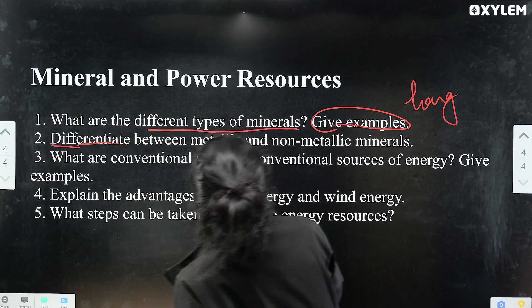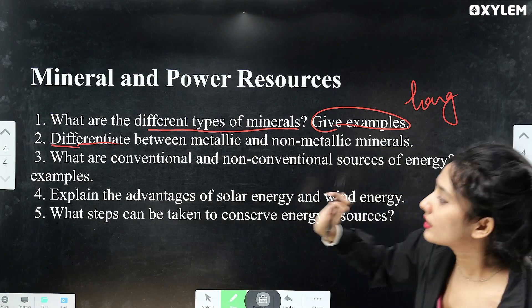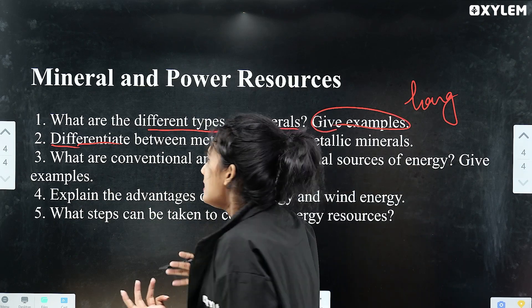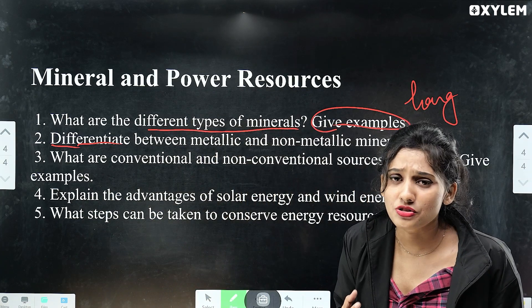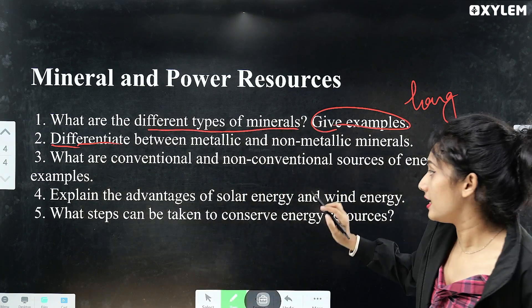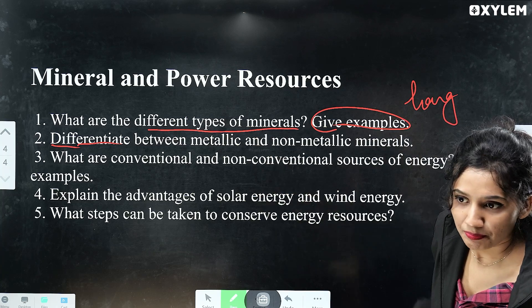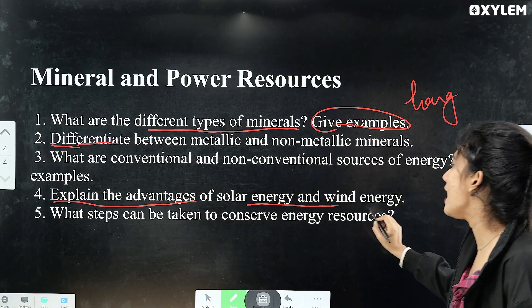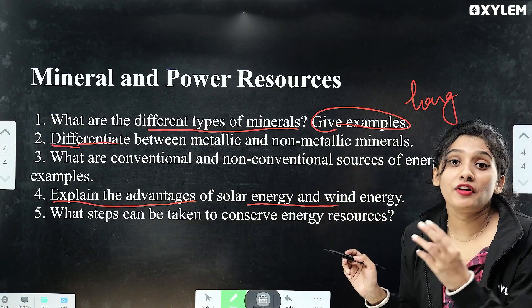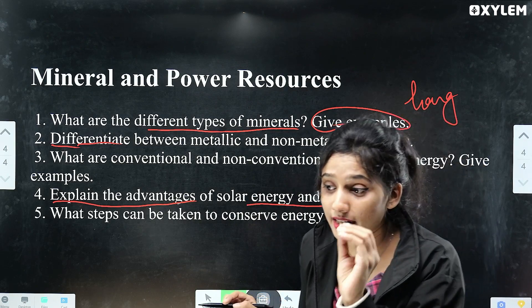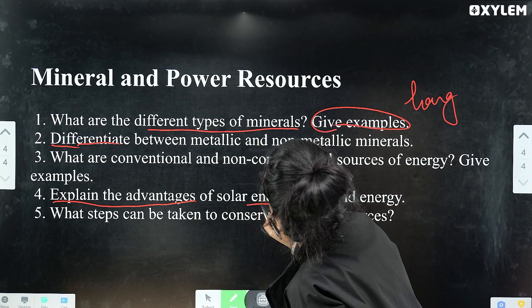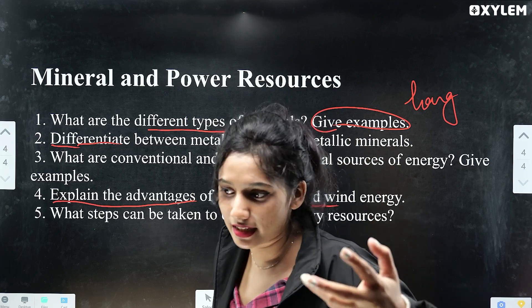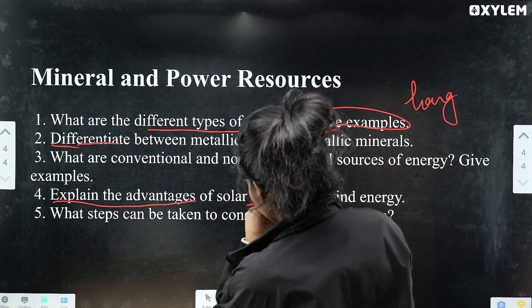Next question: what are conventional and non-conventional sources of energy? Give examples. For instance, ferrous and non-ferrous are types of mineral resources, while conventional and non-conventional are types of energy resources. And next question: explain the advantages of solar energy and wind energy. If you know the advantages and positive sides of solar and wind energy, answer it.